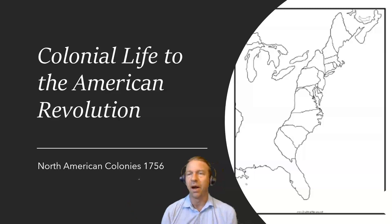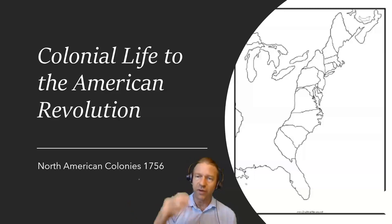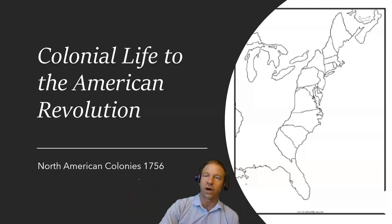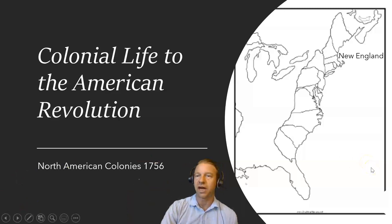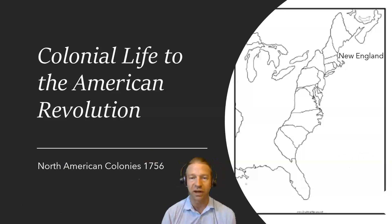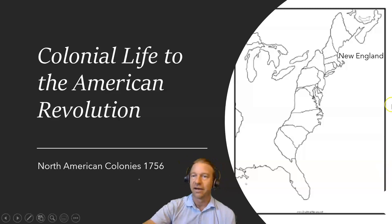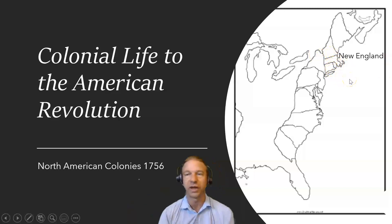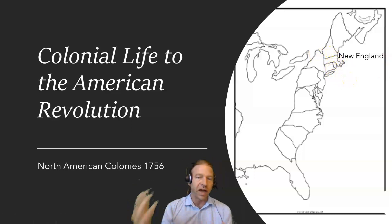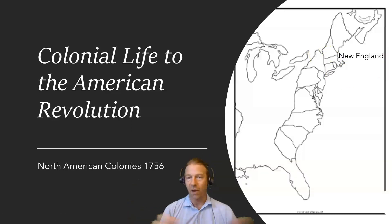We're looking here at a map of the British North American colonies, circa 1756. When we look at the North American colonies, in the north we're talking about the New England colonies. The New England colonies were centered around Massachusetts Bay, Rhode Island, and Connecticut — these were really the heart of the New England colonies. The New England colonies never had a widespread use of slavery.